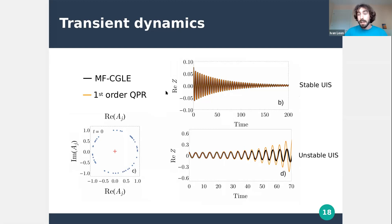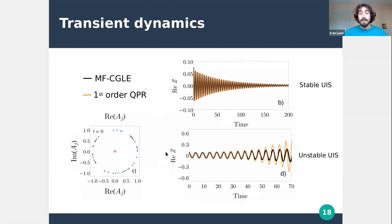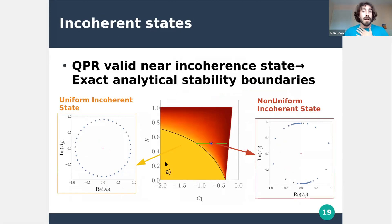Starting with random initial conditions near a circle in a parameter space where the uniform incoherent state is stable, both the exact and approximate systems decay to the uniform incoherent state in essentially the same way with the same frequency. When initialized in a parameter region where the uniform incoherent state is unstable, both initially behave the same way, but when the mean field grows large, the approximation fails — as expected, since the reduction is only valid for small mean field. Even then, it describes the frequency well.